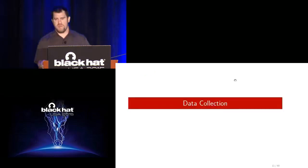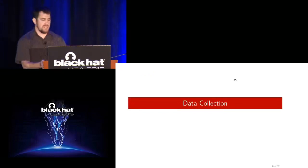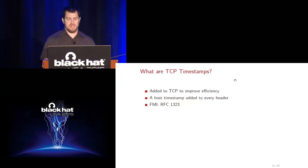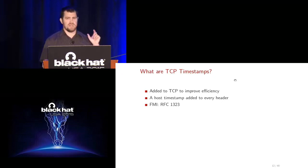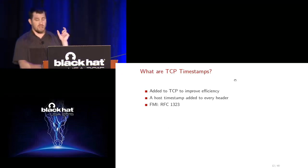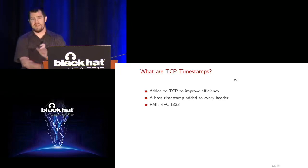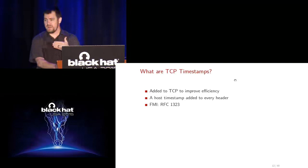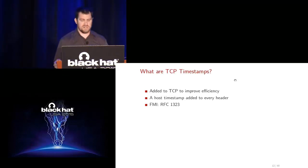On to data collection: how we obtain the information we need to distinguish timing differences. A little bit about TCP timestamps — they're a very simple mechanism to make TCP more efficient. Whenever a host sends a packet as part of a TCP connection, the host's current time is actually labeled on the packet. This could be really useful because we can look at the time the host sent the packet rather than when we received it, eliminating a lot of potential noise on the network.